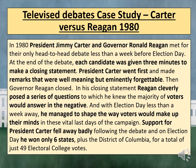In 1980, President Jimmy Carter and Governor Ronald Reagan met for their only head-to-head debate less than a week before Election Day. Each candidate was given three minutes to make a closing statement. President Carter went first and made remarks that were well-meaning but eminently forgettable. Then Governor Reagan closed. In his closing statement, Reagan cleverly posed a series of questions to which he knew the majority of voters would answer in the negative, managing to shape the way voters would make up their minds in those last vital days. Support for President Carter fell away badly, and on Election Day he won only six states plus the District of Columbia for a total of 49 electoral college votes.